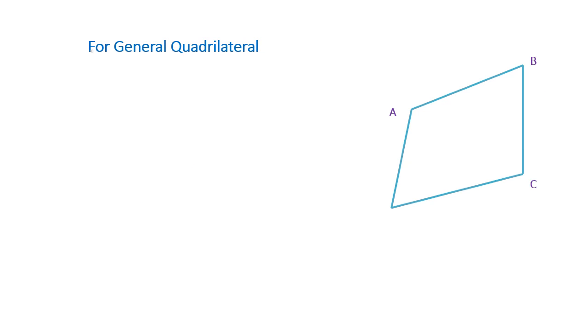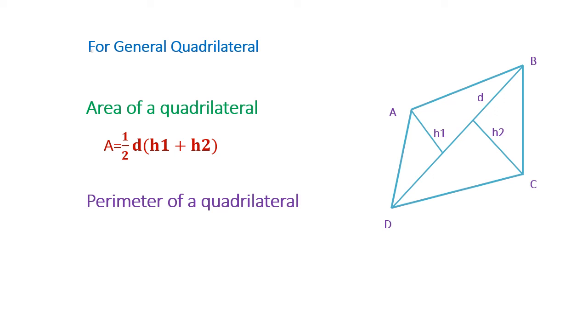For general quadrilateral, area of a quadrilateral A equals half times D times quantity H1 plus H2. Perimeter of a quadrilateral P equals AB plus BC plus CD plus DA.